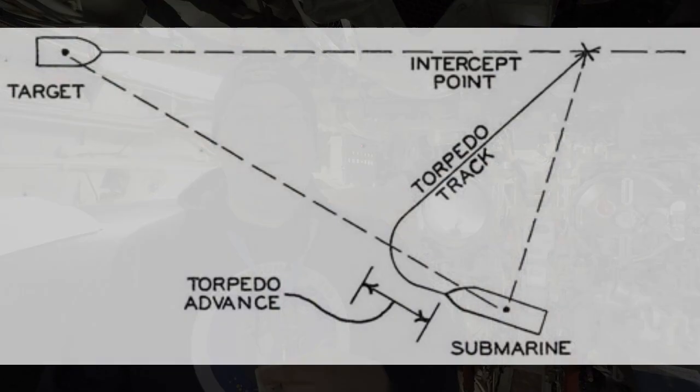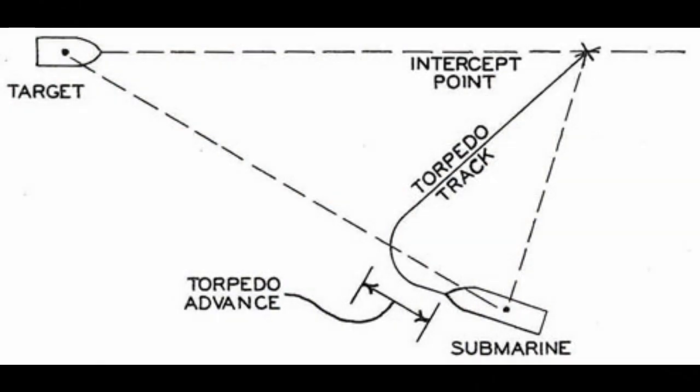When the torpedo is launched, it will travel in a straight line up to a predetermined distance. This distance is called the reach. When the torpedo comes to the end of the reach, the gyroscope will activate and cause the weapon to turn in the water, until its course has been altered a number of degrees equivalent to the value of the gyro angle. It will then resume a straight line, and if we've done our job correctly, hopefully strike the target at the intercept point.